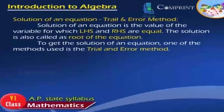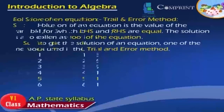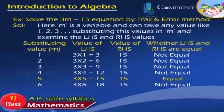Solution of an Equation — Trial and Error Method. The solution of an equation is the value of the variable for which LHS and RHS are equal. The solution is also called the root of the equation. One method used to get the solution is the trial and error method. Example: Solve 3m = 15 by the trial and error method. Here, m is a variable and can take any values like 1, 2, 3, and so on. We substitute each value in m and examine the LHS and RHS.